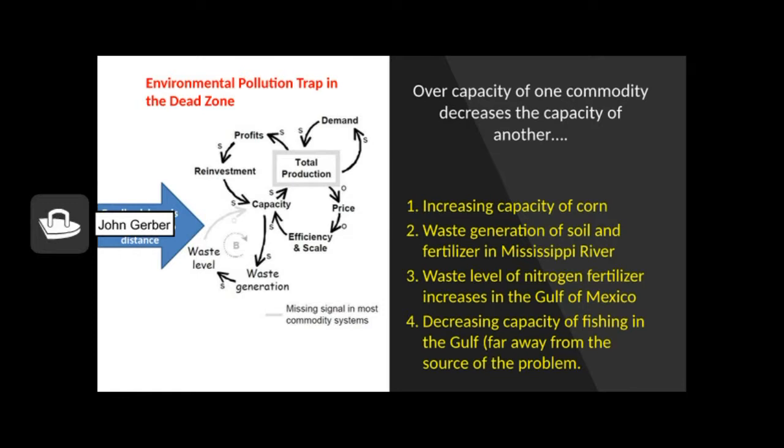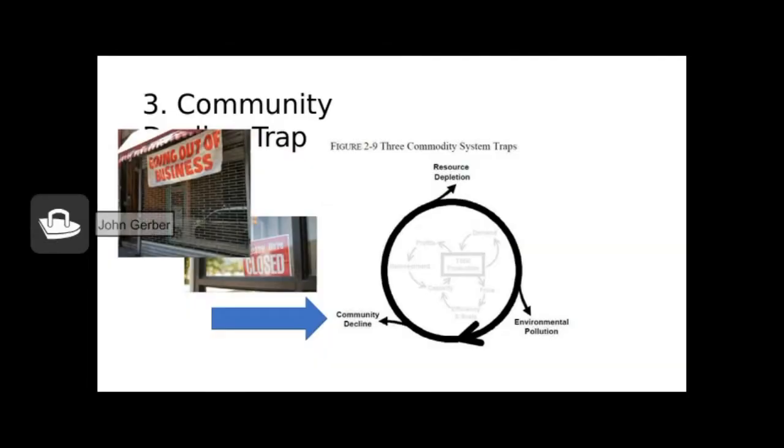Using our systems dynamics model again, we see, one, the first thing that happens is the increased capacity of corn. Two, waste generation of soil and fertilizer in the Mississippi River increases. Three, the waste level of nitrogen fertilizer increases in the Gulf. And four, there's a decreased capacity of fishing in the Gulf that happens far away from the problem. The solution is to point out the missing feedback loop. As waste level increases, the Lorax can stand up and say, hey, that's not okay. As waste level is increasing, capacity someplace else of some other product is decreasing. We need to point out these problems using systems thinking.